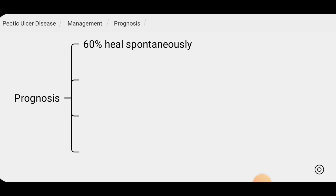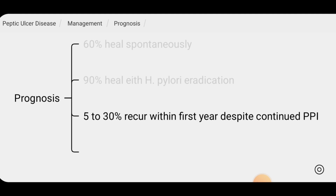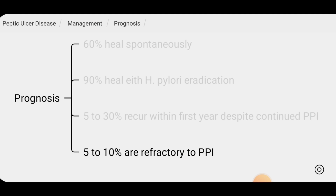Considering prognosis, approximately 60% of peptic ulcers heal spontaneously, but with H. pylori eradication, ulcer healing rates are more than 90%. Even with continued PPI use, approximately 5–30% of peptic ulcers recur within the first year, and approximately 5–10% of ulcers are refractory to anti-secretory therapy with PPIs.